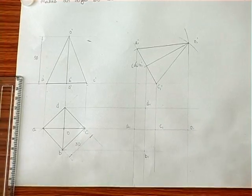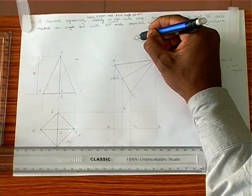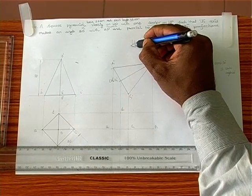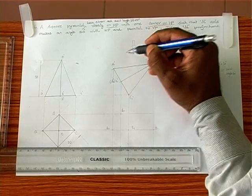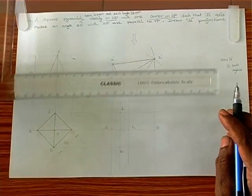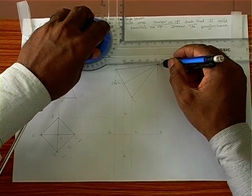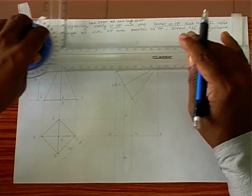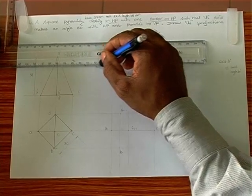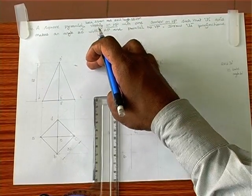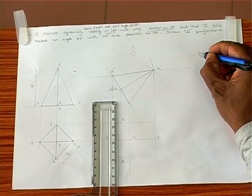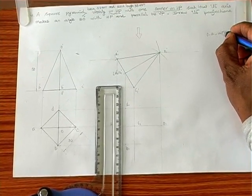Now to assess visibility, we go to the front view and assume a downward arrowhead. We identify the left extreme corner and the right extreme corner, then assume a horizontal line through both extreme corners. Whatever is above these two lines is visible. In the visible zone, we have only the line OA — so OA alone is visible and all other lines are invisible.